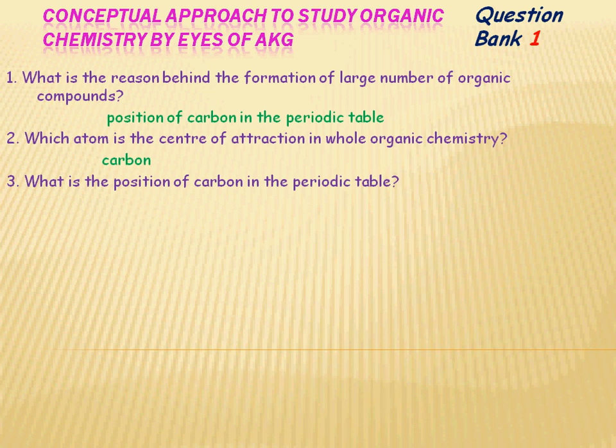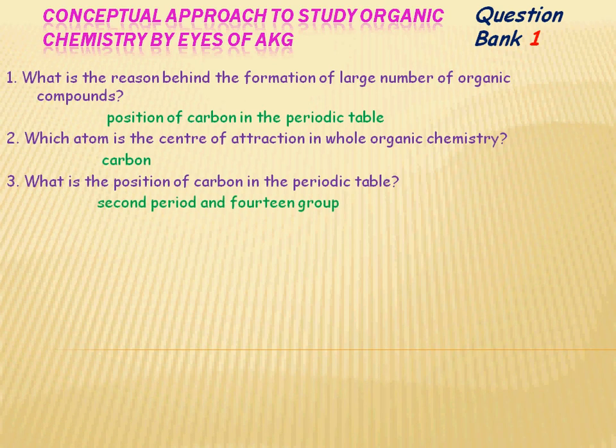What is the position of carbon in the periodic table? When you are asked to write the position of carbon in the periodic table, you must write its period as well as group. Therefore, the position of carbon is in the 2nd period and the 14th group.